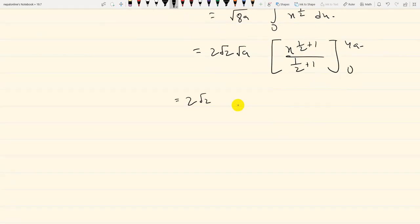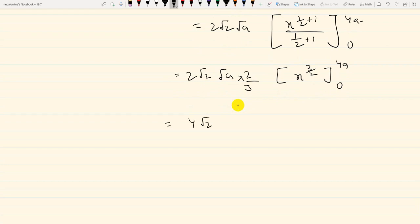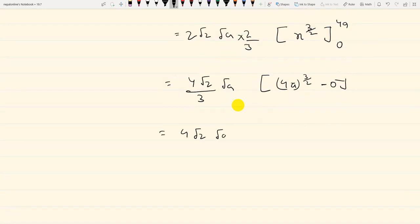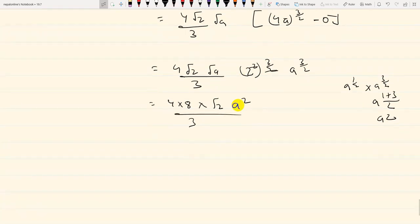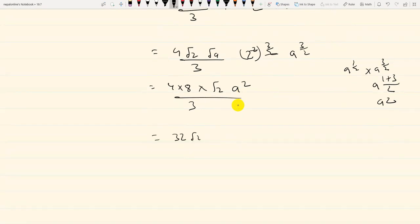This equals 2√2√a times (2/3)x^(3/2) evaluated from 0 to 4a. Substituting the limits, we get (4√2/3)√a times (4a)^(3/2) minus 0, which simplifies to (32√2a²)/3.